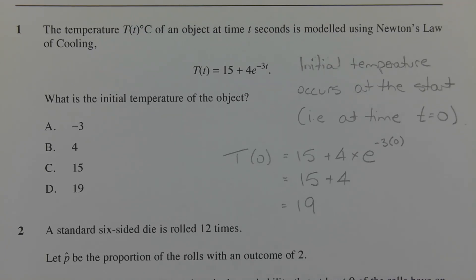So substituting t equals 0 in the formula, we get T(0) is equal to 15 plus 4 times e to the power of negative 3 times 0, and negative 3 times 0 is 0, and e to the power of 0 is 1, and 4 times 1 is 4.